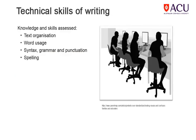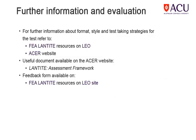In Part B, there will be a focus on the technical skills of writing. There are four skills that will be assessed in this part of the test: text organisation, word usage, syntax grammar, and punctuation and spelling. They will be discussed further in the technical skills of writing presentation. Again, these are skills that you have and have applied in your writing. Remember that there are a lot of additional practice materials and resources available on the Faculty of Education and Arts Lantite support site on LEO.